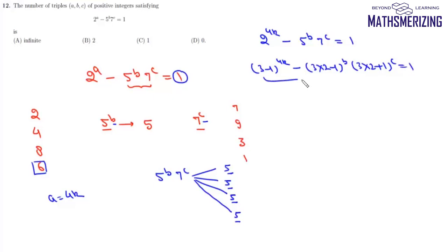Now we take left hand side modulo 3. Here we will get this remainder as 1, here this remainder will be minus 1 to the power B and here will be simply 1 and right hand side will be 1. So modulo 3 left hand side will be 1 minus minus 1 to the power B whereas right hand side is 1. Now this left hand side it cannot be 1 for any possible value of B. That means this equation has no solution or the number of triplets A B C is simply 0 and that's your option B.